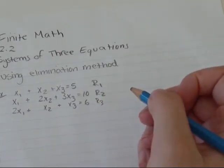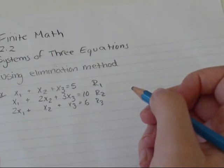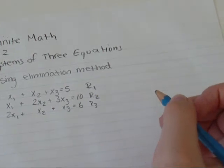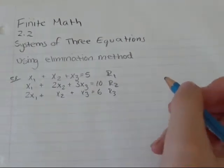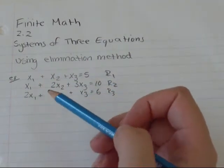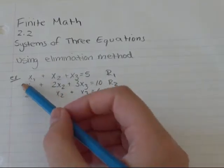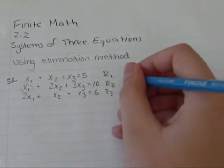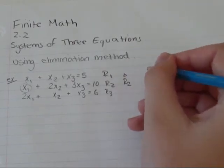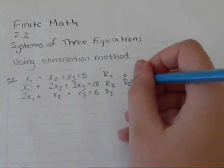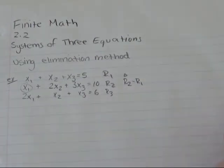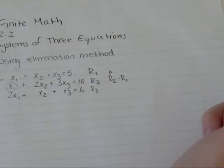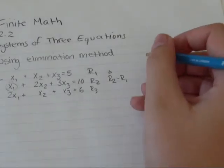The first thing I'm going to do is try to get rid of x1. I'm going to do row 2 as the one I'm changing, and I'm changing it by going row 2 minus row 1. So I'm going to write down the other rows first — row 1 and row 3 — because I'm not changing those.